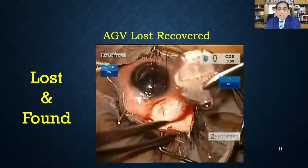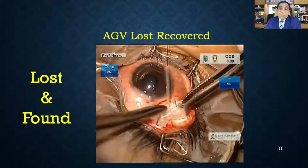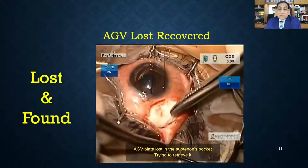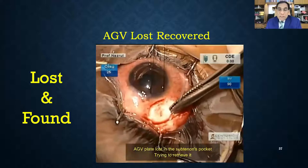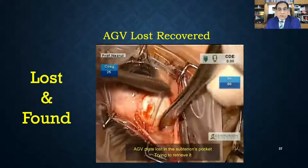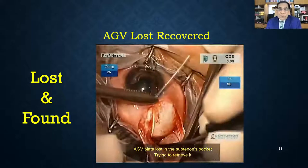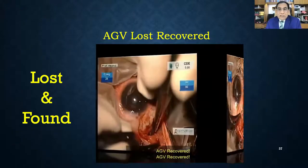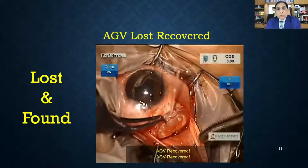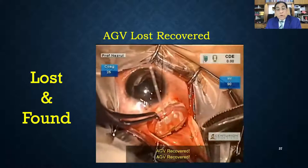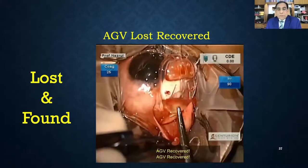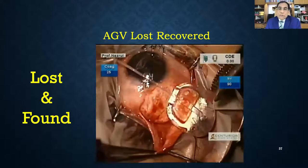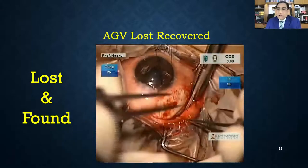I had one 'lost and found' case — once while placing the device, it migrated posteriorly. I struggled for a few minutes to retrieve it before finally recovering it. This is why many surgeons use preplaced sutures — to prevent the implant from being lost posteriorly. Always hold it at one corner with forceps so it does not slip down or up.